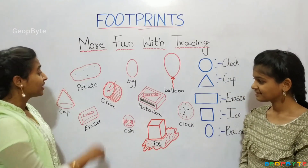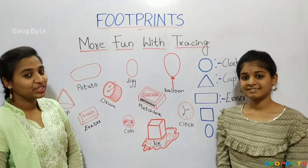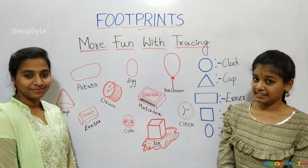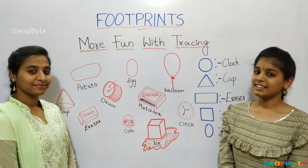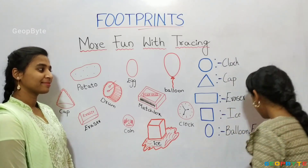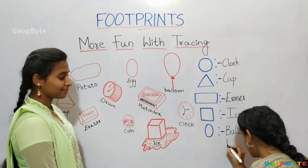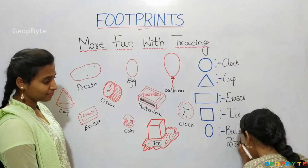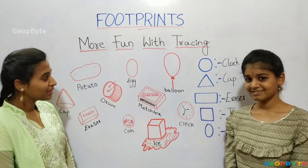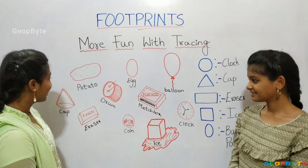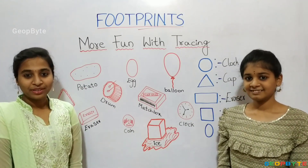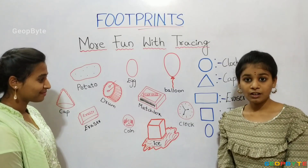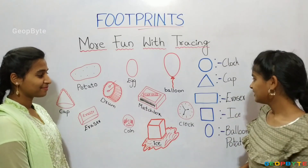Now, this potato is in which shape? Yes, correct answer. It is in the shape of oval. Let us write. This drum is in which shape? Yes, correct answer. It is in the shape of a circle. Let us write.